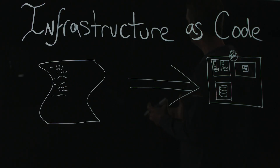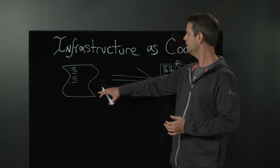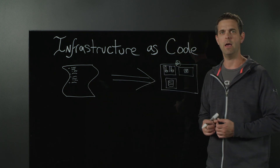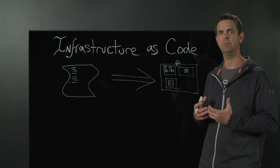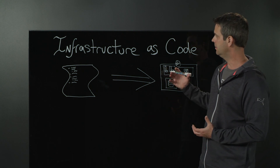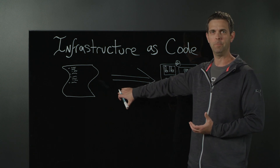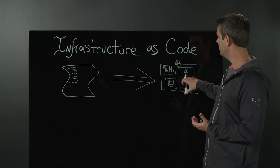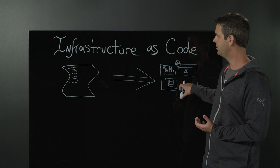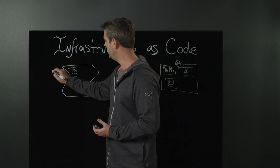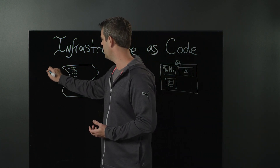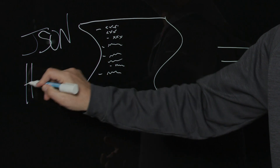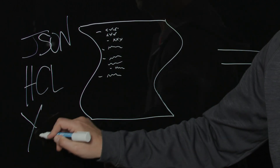With infrastructure as code, it's pretty much just like it sounds. We're going to generate a document — this is configuration, a script of some sort — that allows us to define what it is we want to create inside of our application infrastructure, our ecosystem. This document is traditionally developed in the form of JSON, HCL, or in some cases even YAML.